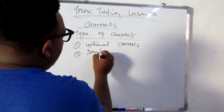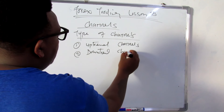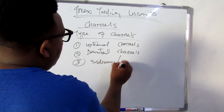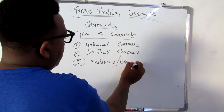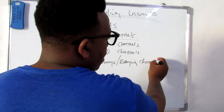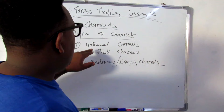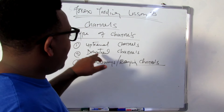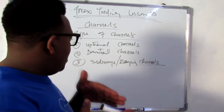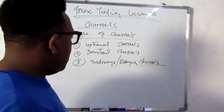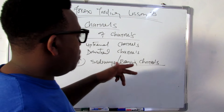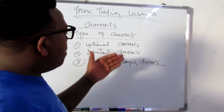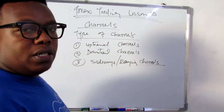Number two, we also have downtrend channels. And number three, we have sideways — also called ranging channels. With the uptrend, as the name goes, these are channels which show that the market is heading in an upward direction. For the case of downtrend channels, they show that the market is in a downtrend and moving downwards. And then you also have the ranging or sideways channels. I'll be showing you how to take advantage of these and how to identify each type.